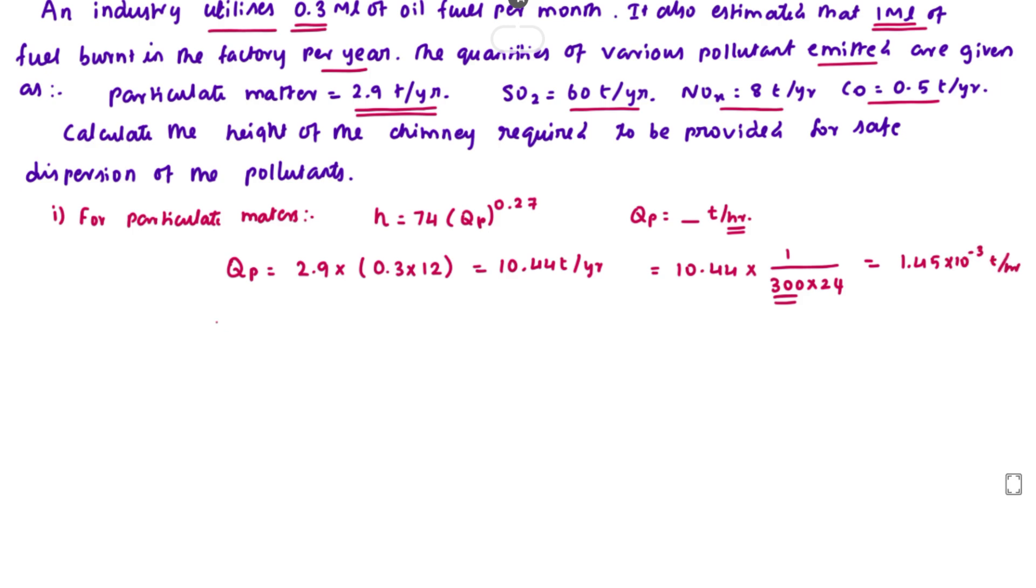We substitute this value: H equal to 74 into 1.45 into 10 power minus 3, power 0.27. Solving this, we get the height of the chimney for particulate matter is 12.67 meters.